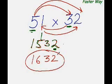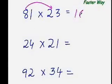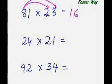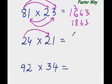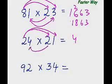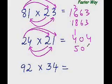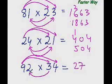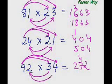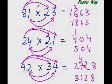Let's practice more examples. First: 8 times 2 is 16, then 8 times 1 is 8 plus 2 times 2 is 4 — wait, 8 times 3 is 24 and 2 times 1 is 2, so 24 plus 2 is 26, and 1 times 3 is 3 — answer is 1863. Next: 2 times 2 is 4, 2 times 1 plus 2 times 4 gives 2 plus 8 is 10, and 4 times 1 is 4 — answer is 504. Then: 9 times 3 is 27, 9 times 4 plus 3 times 2 gives 36 plus 6 is 42, and 2 times 4 is 8 — answer is 3128.